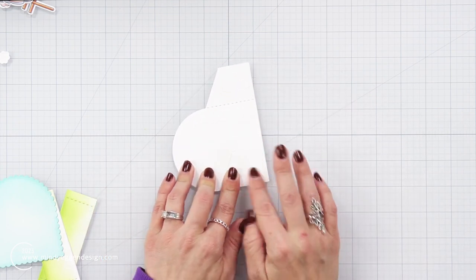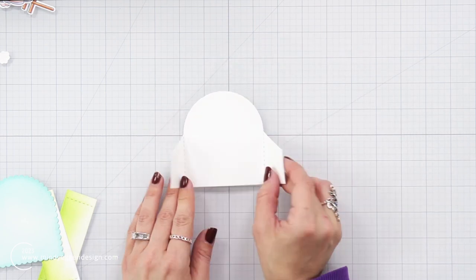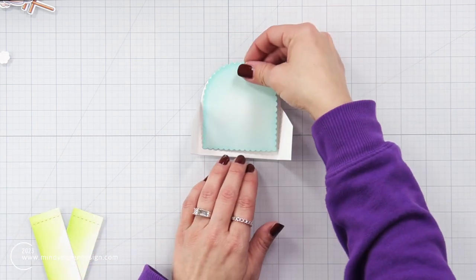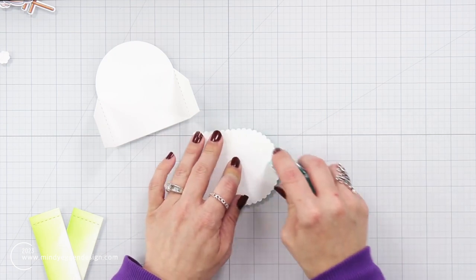So on our main base piece, which is that larger piece, there are some lines that the die cut into it. And I'm just going to fold along those lines. Now, this is the scalloped piece that I had ink blended with the light blue ink.